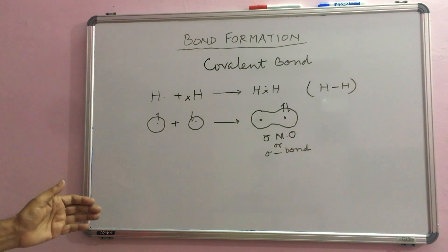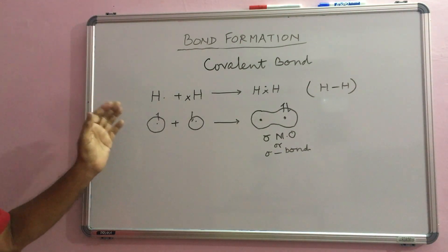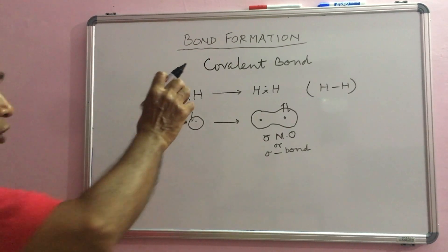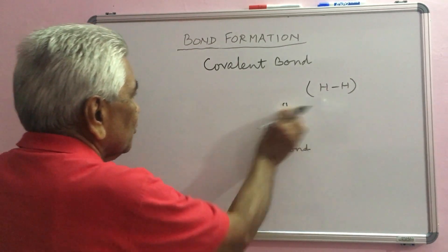This type of bonds are encountered in organic compounds. So, we will take carbon now and see how carbon atom forms bonds.